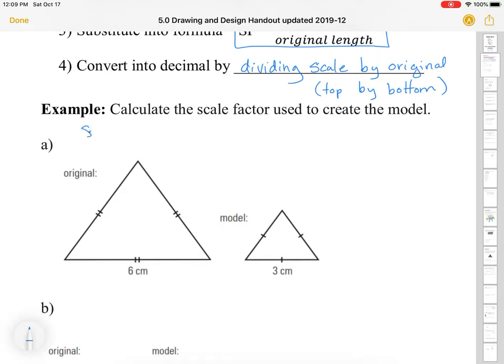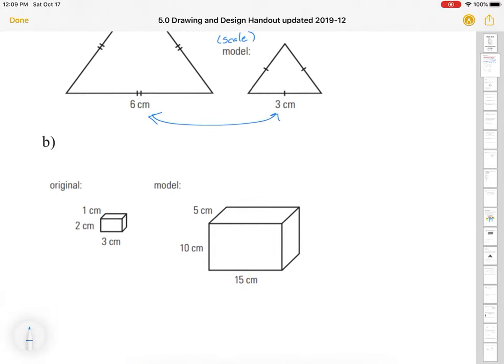Calculate the scale factor used to create the model. So here we have our original and our model. So here we're shrinking. That means our scale factor will be less than one. So to figure out our scale factor, we take the scale over the original. Now they're both in centimeters. So that's good. So our model, we have 3 centimeters compared to the 6 centimeters. 3 divided by 6 is 0.5. So our scale factor is 0.5.